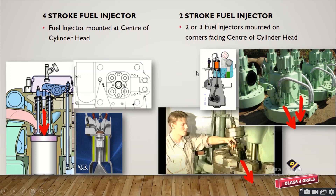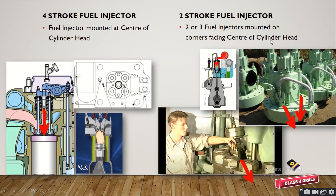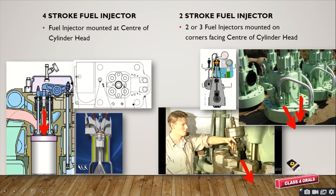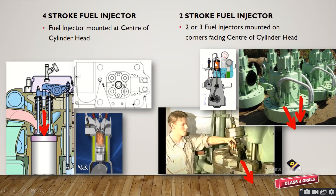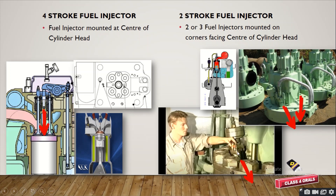Whereas in the 2-stroke type fuel injector, there are around 2 to 3 fuel injectors mounted on the corners of the cylinder head, facing towards the center. You can see in the picture here there are 2 fuel injectors placed adjacent to each other, both focusing on the center of the cylinder head. You can also see here 2 fuel injectors being fired, and in this figure the engineer is doing maintenance of the fuel injector, which is not at the center but on the collar.